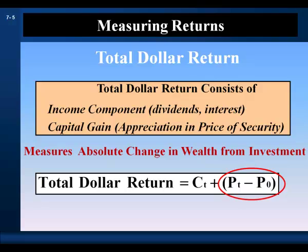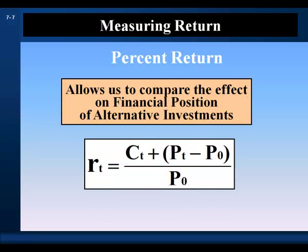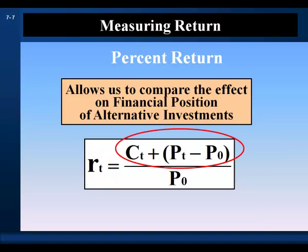The total dollar return includes the end-of-period price minus the beginning-of-period price. It is more convenient to express returns as percentages rather than dollars, because percentages apply to any amount invested. The percentage return answers the question: how much return do we get for each dollar invested? As a relative measure, it allows us to compare the effect on financial position of alternative investments. We calculate the percent return by dividing the total dollar return by the initial dollar investment.